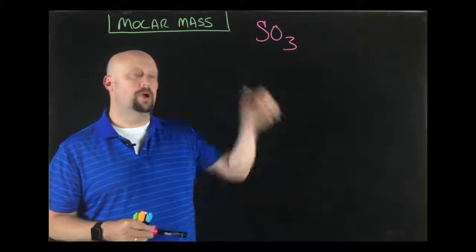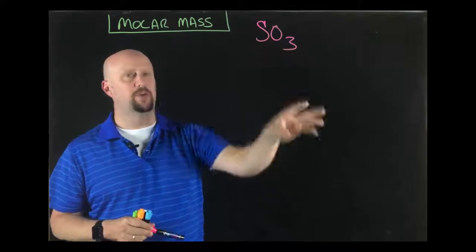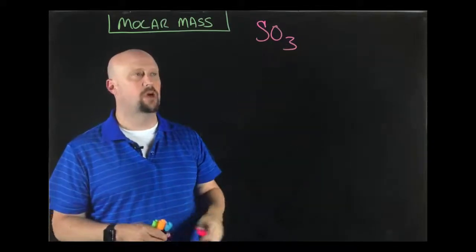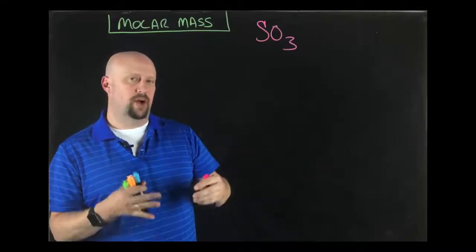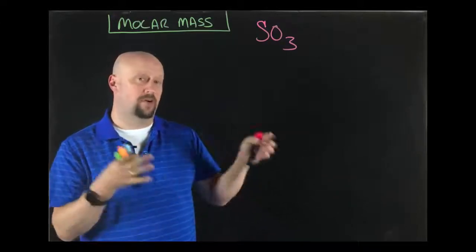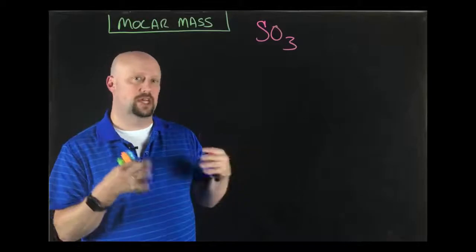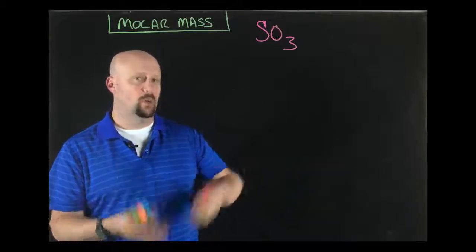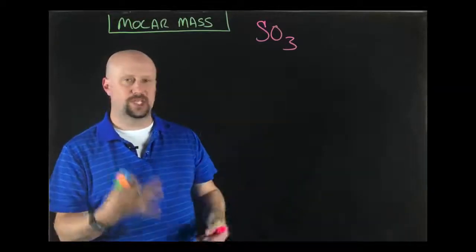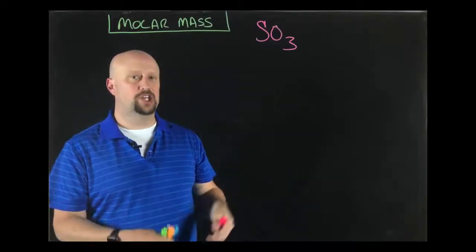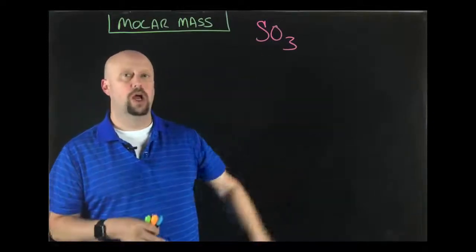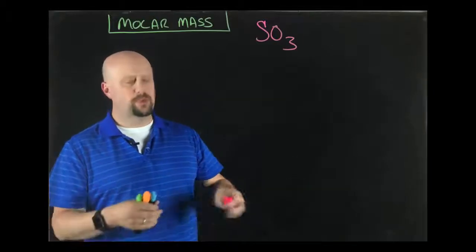Remember that what we did for an element is that we looked up the individual value on the periodic table of that element, the atomic weight that was there. We said that was the mass of a whole mole of that thing, and so we took that as the molar mass. For instance, we had aluminum in the last video, 26.98 grams equals one mole. For a single oxygen it was 16.00 grams equals one mole.